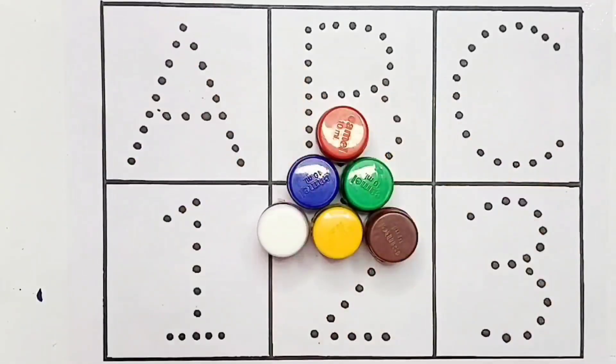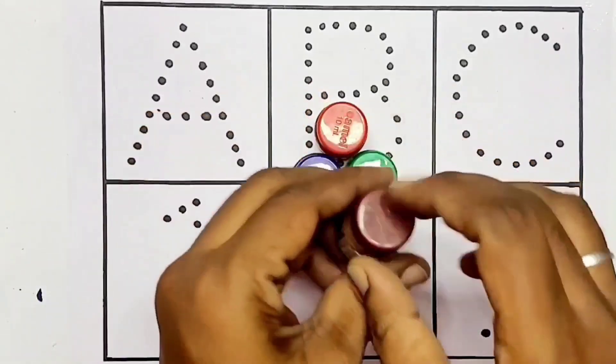Hello kids, welcome back to MG Colors. Today we are going to color A, B, C and 1, 2, 3.